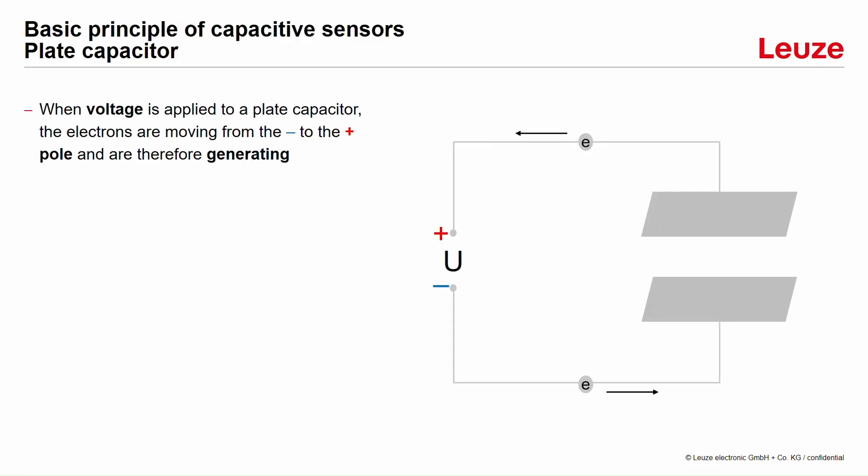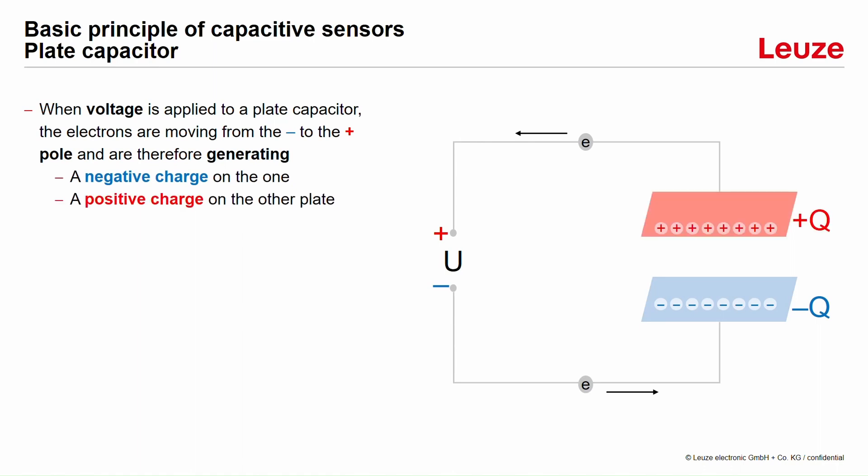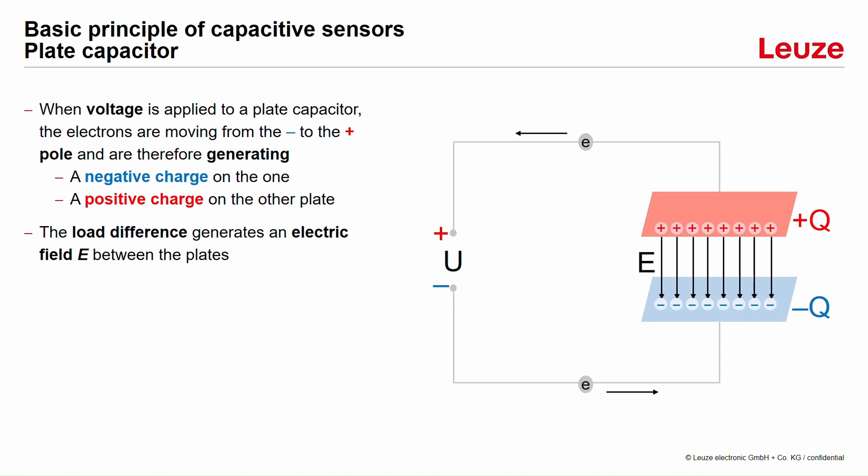In order to understand the basic principles of a capacitive sensor, we need to learn first about the functionality of a plate capacitor. If we apply a voltage to a plate capacitor, the electrons will move from the negative to the positive pole. Therefore, there will be a negative charge on one plate and a positive charge on the other plate. This charge difference between the two plates generates an electric field, and the shift of the electrons will end when the voltage in the capacitor equals the voltage from the voltage source.